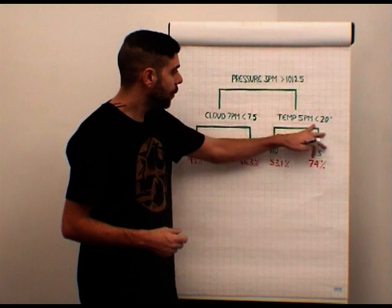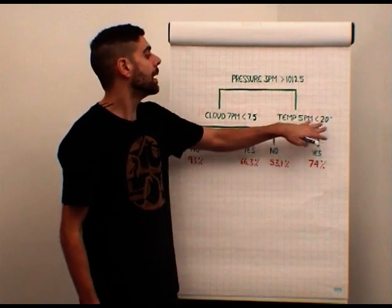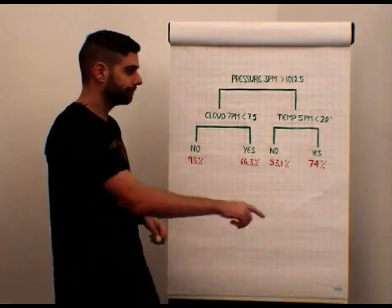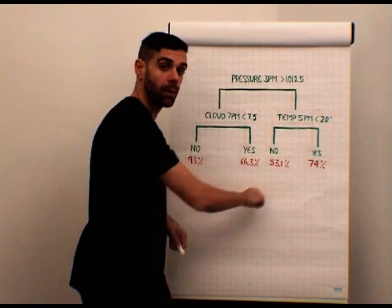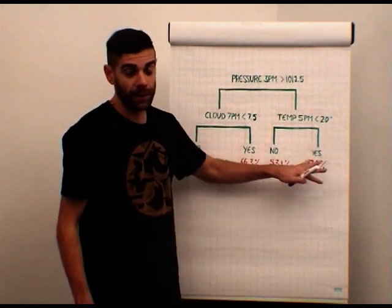Following this branch, we make this decision. Was the temperature today at 5 p.m. less than 20 degrees? Let's say yes. So we have tomorrow a 74% probability that yes, it will be raining.